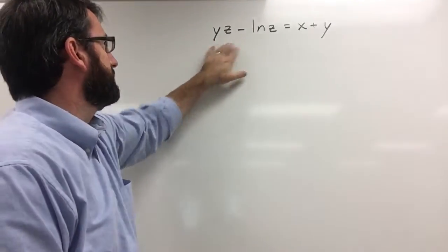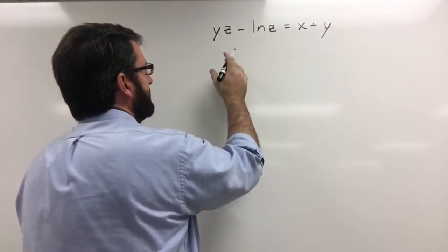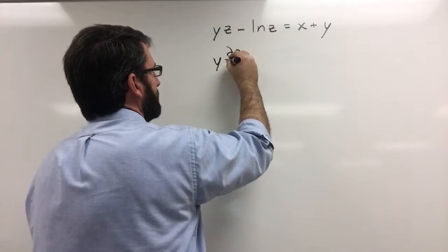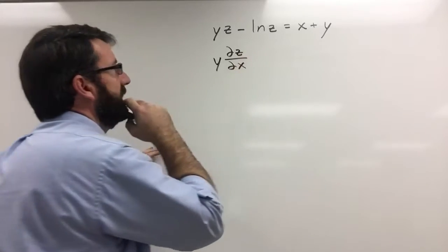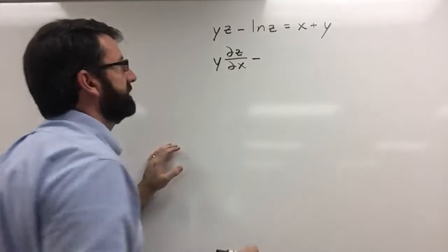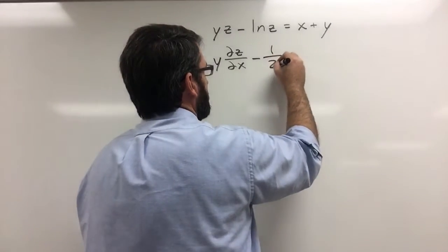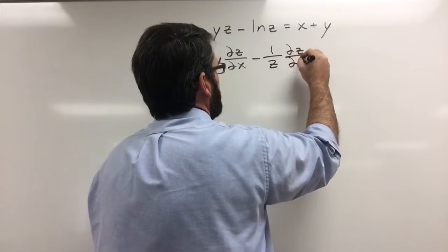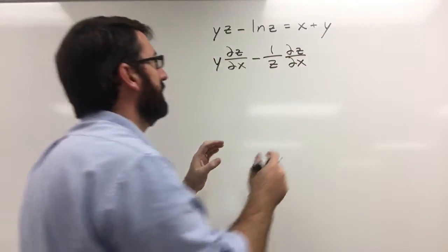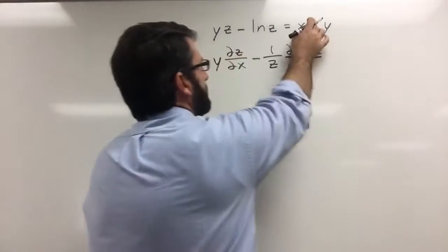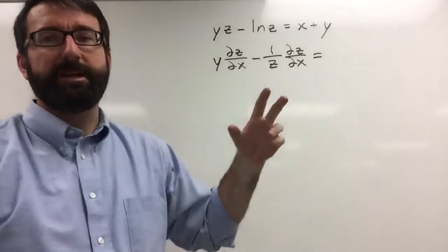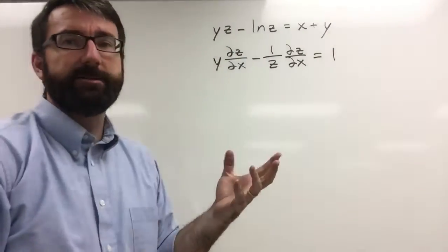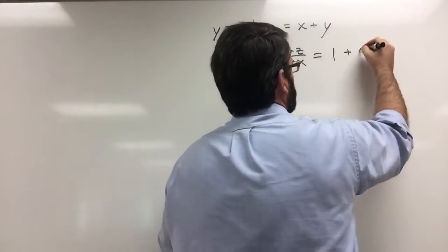The derivative of yz is going to be y times the partial derivative of z with respect to x, minus — by the chain rule — 1 over z times the partial derivative of z with respect to x. That is equal to the derivative of x with respect to x, which is just 1, and since we're holding y constant, the derivative of the y term is just 0.